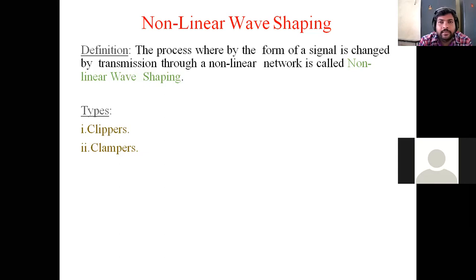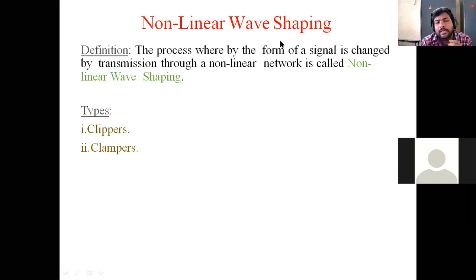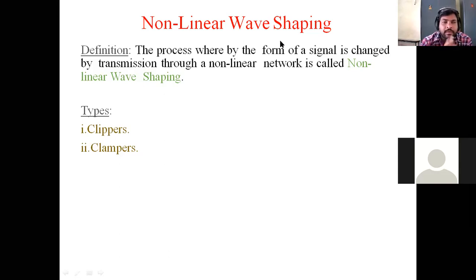The type of circuit built using only linear elements is called a linear circuit. In a linear circuit, when we apply an input and observe the output response, that is called linear wave shaping. The input application and the type of output waveform define linear wave shaping. Similarly, we also have non-linear wave shaping.